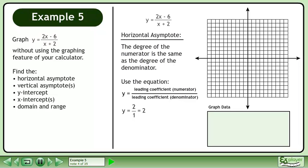The leading coefficient of the numerator is 2 and the leading coefficient of the denominator is 1. Dividing gives a result of 2. The horizontal asymptote is the line y equals 2.